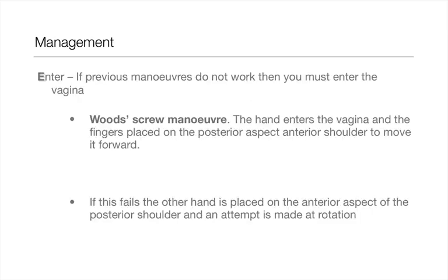E is for Enter. You must enter the vagina — this is where the episiotomy comes in useful because it gives you more room to manoeuvre. Woodscrew's manoeuvre is when the hand enters the vagina and the middle fingers are placed on the posterior aspect of the anterior shoulder; you then try to move the baby forward. If this fails, you can put the other hand on the anterior aspect of the posterior shoulder and attempt a rotation. These are tricky manoeuvres which should only be carried out by an experienced obstetrician.